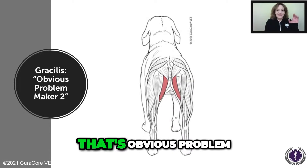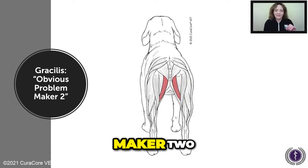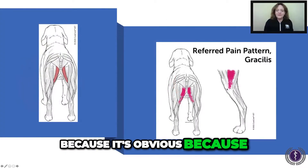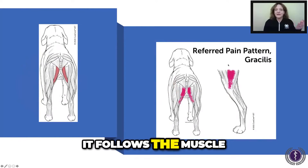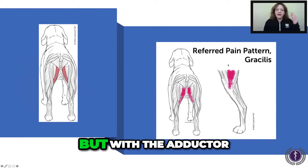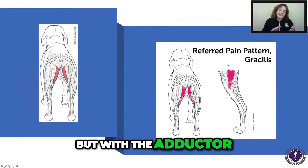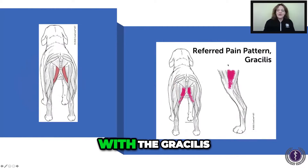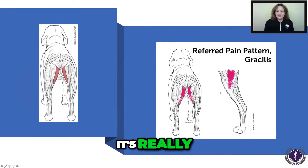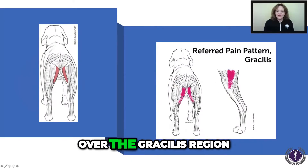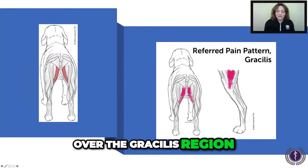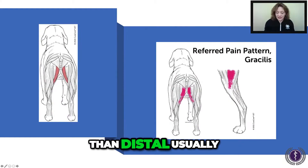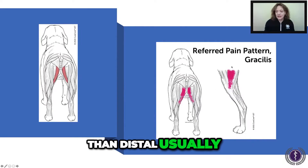The gracilis is an obvious problem maker too, because it follows the muscle. With the adductor, it extended further. With the gracilis, it's really over the gracilis region and more proximal than distal usually.